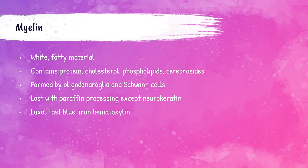Myelin is a white fatty material containing protein, cholesterol, phospholipids, and cerebrosides. Myelin is broken down with paraffin processing, except for a proteolipid called neurokeratin — if processed in paraffin, neurokeratin will be what remains in the embedded tissue. The myelin sheath is like a sleeve wrapped around the axons, formed by oligodendroglia in the CNS and Schwann cells in the peripheral nervous system. When injury causes myelin breakdown, a lipid is formed. The stains Luxol Fast Blue and iron hematoxylin are commonly used to demonstrate the myelin sheath.